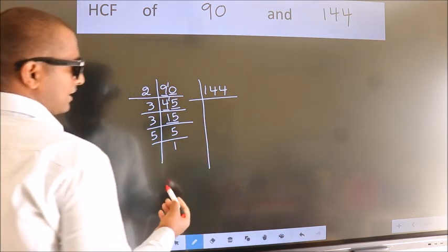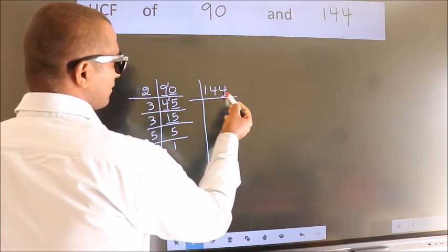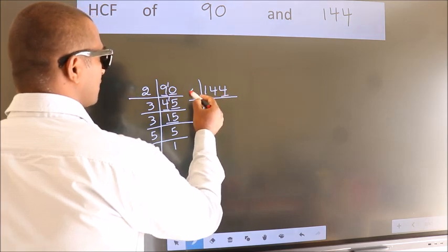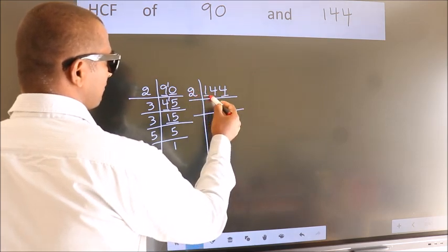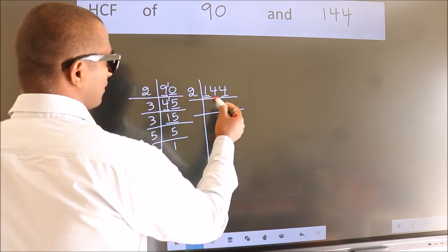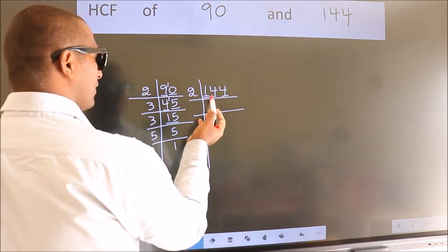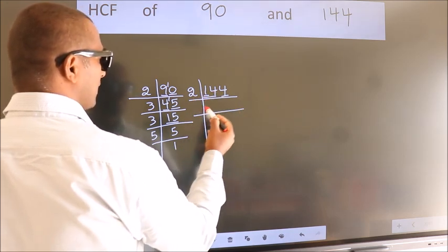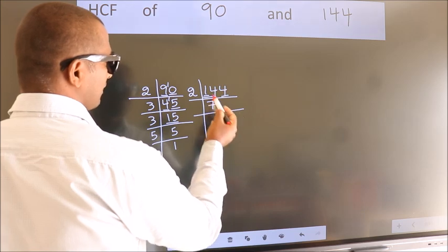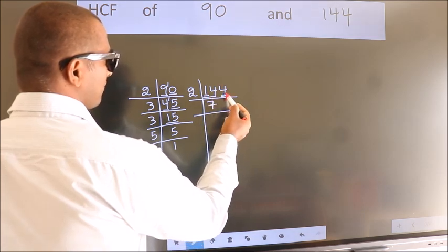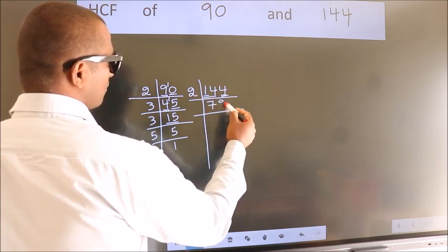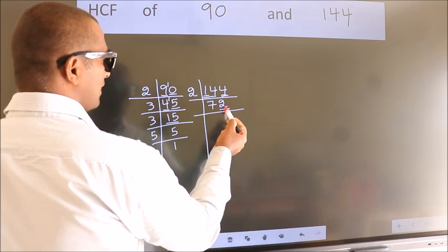The other number. The other number, last digit 4, even number, so we should take 2. First number 1, smaller than 2, so take 2 numbers 14. When do we get 14 in 2 table? 2 sevens 14. The other number 4, when do we get 4 in 2 table? 2 twos 4.